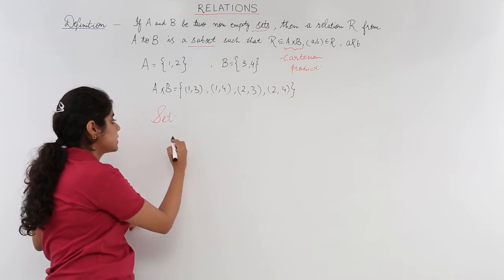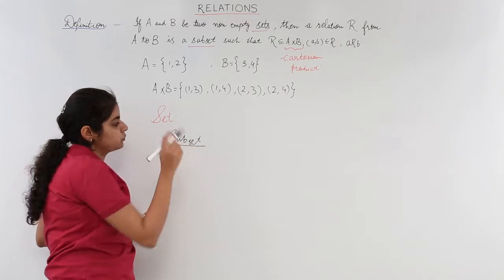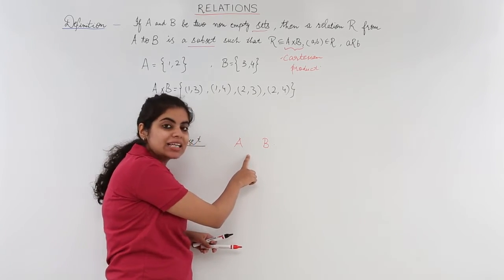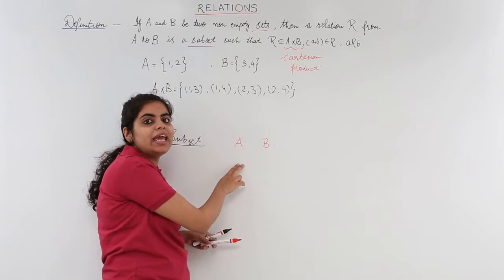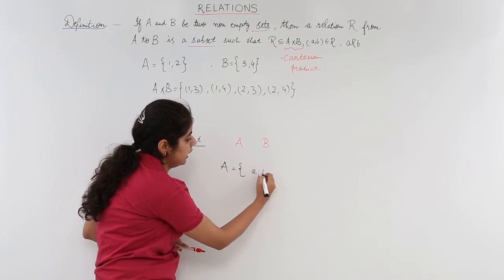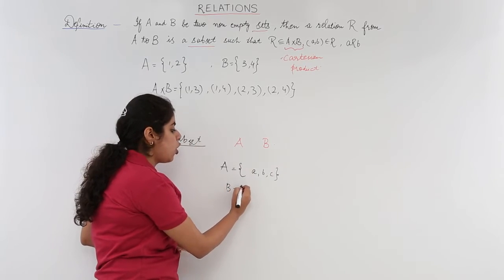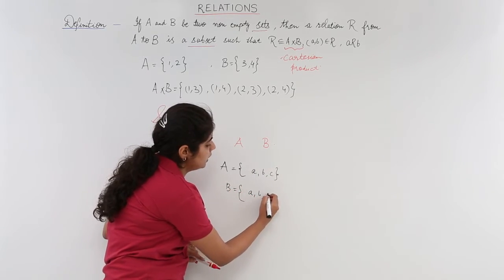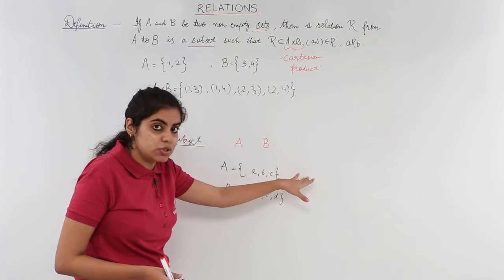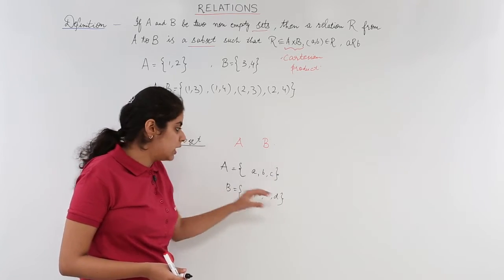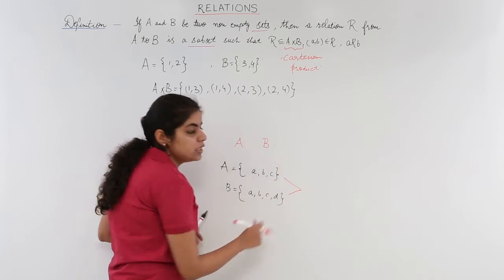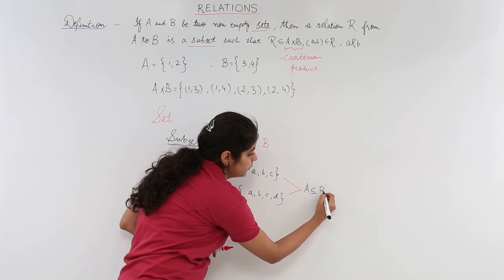So, a relation is a subset where subset means what? Subset for two sets A and B, if all the elements of A are contained in B, then we say A is the subset of B. For example, A has the elements listed as A, B, C and B also has some elements say A, B, C, D. Now in this example where A, B, C are the elements of A, and A, B, C, D are the elements of B, I see that these three elements are contained in these elements. So, here we say that A is a subset of B.